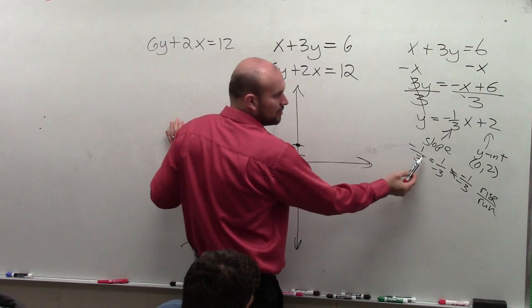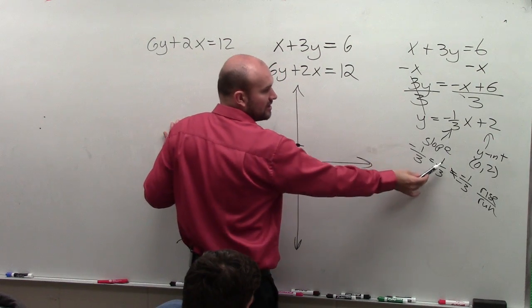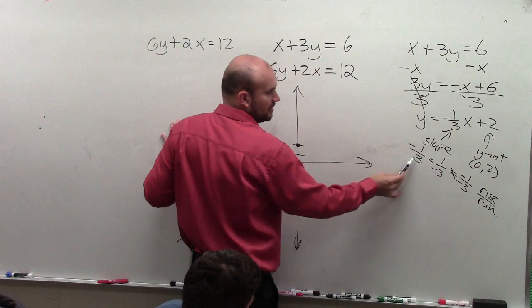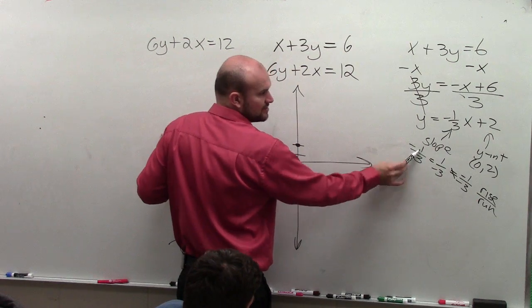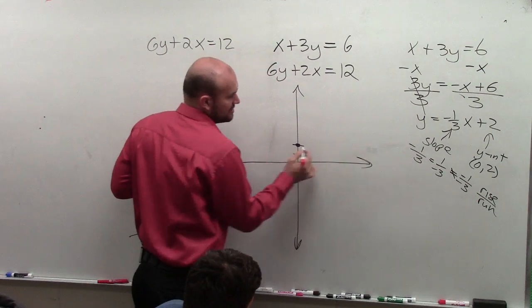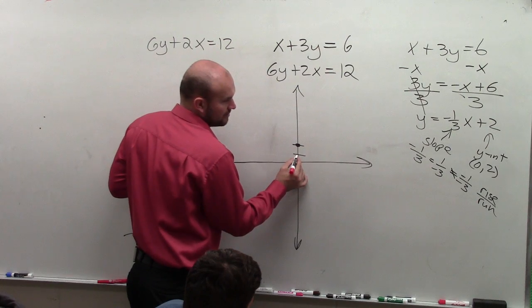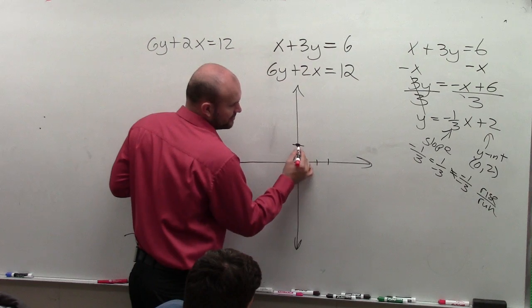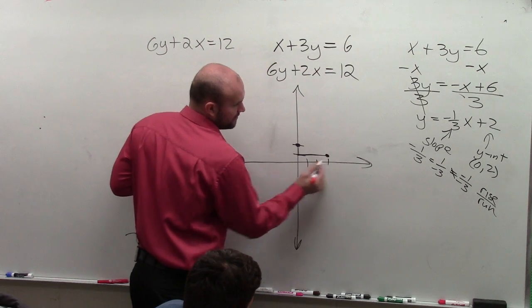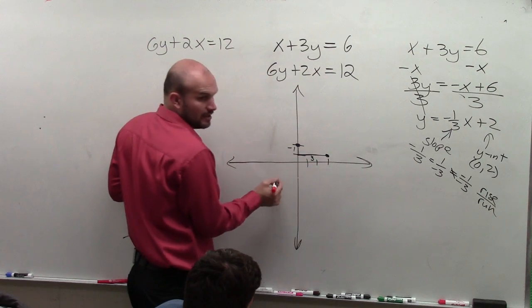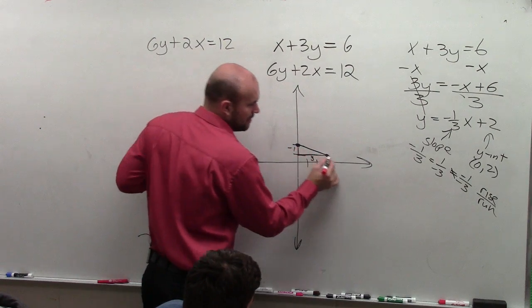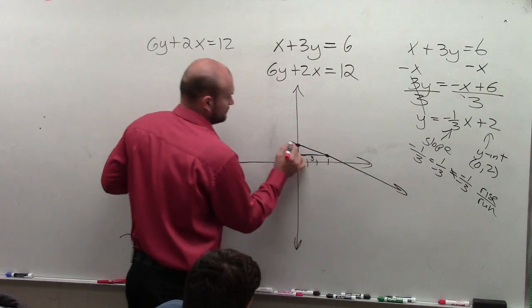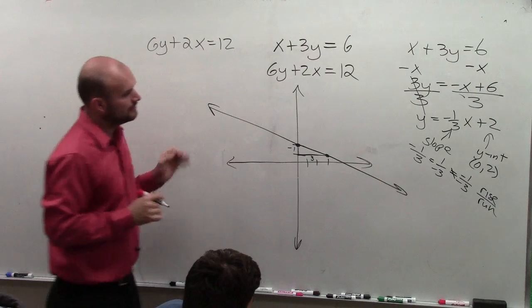Now I use the slope. And again, I could say the change in the y-coordinates is negative 1, or I could say the change in the y-coordinates is positive 1, as long as the other one's negative. So let's just follow this one. The change in the y-coordinates is negative 1, so I go down. And then the change in the x-coordinates is positive 3. So I go down 1 over 3. Negative 1, positive 3. Everybody see my slope triangle? Then I connect.